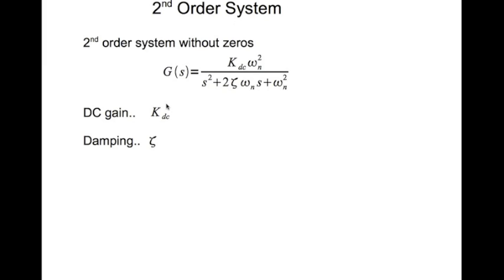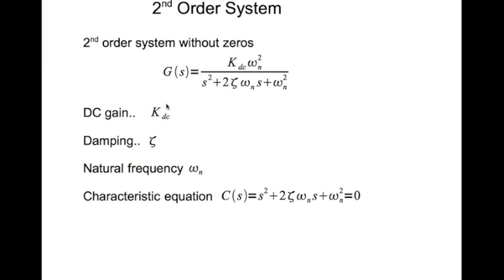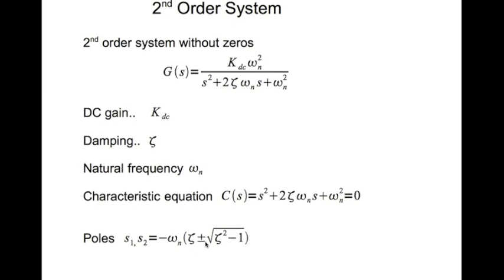Damping is zeta (ζ) and the natural frequency is omega_n (ω_n). The characteristic equation is the denominator set to zero. If you solve that characteristic equation you get the poles — there are two poles since this is a second-order system. The poles are given by minus ω_n times (ζ ± √(ζ²−1)).